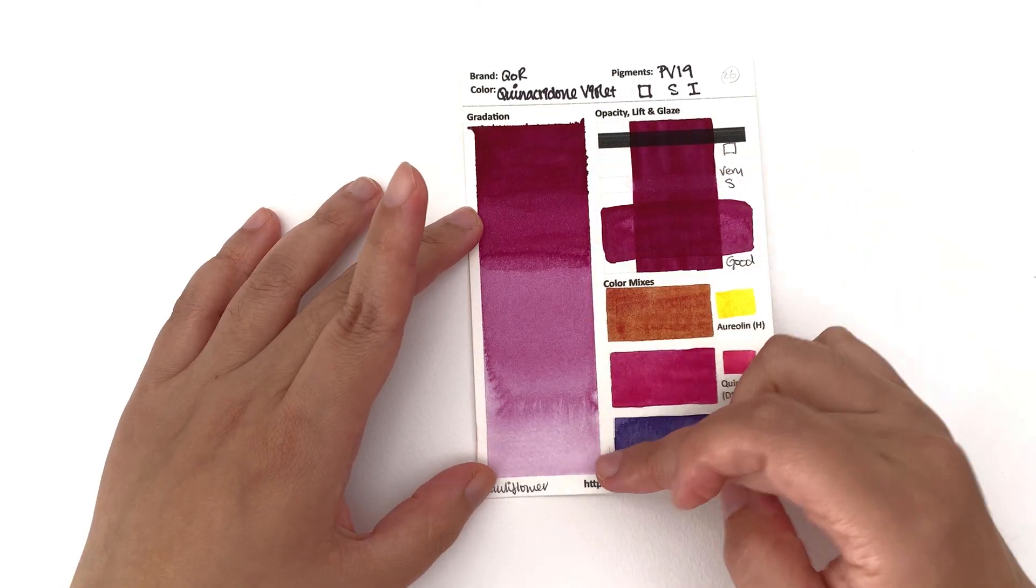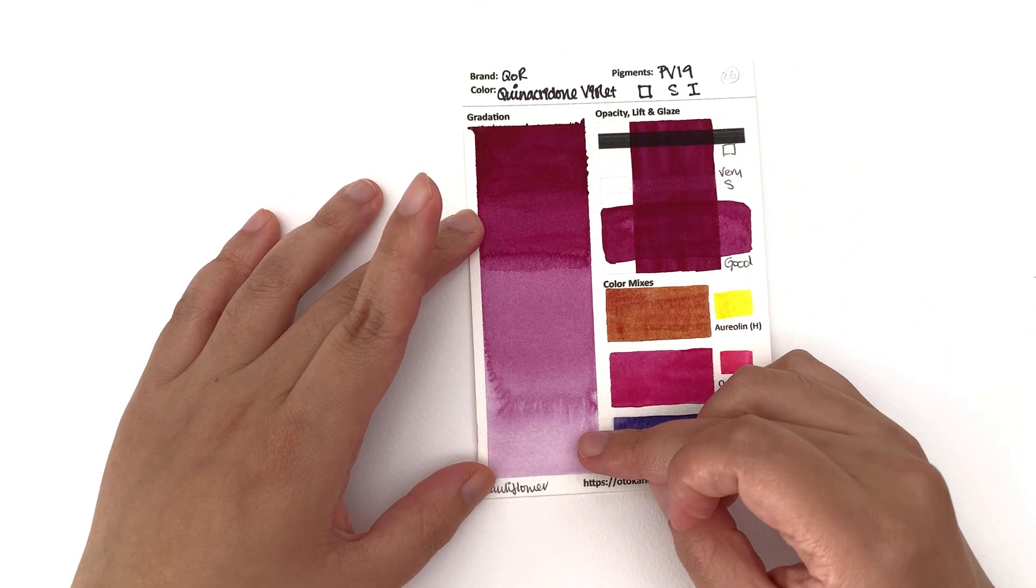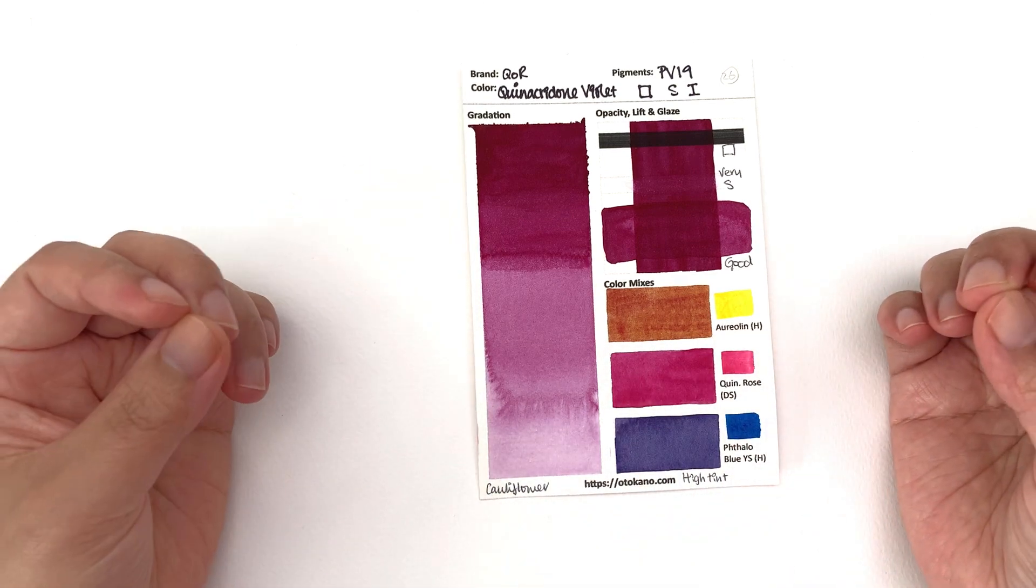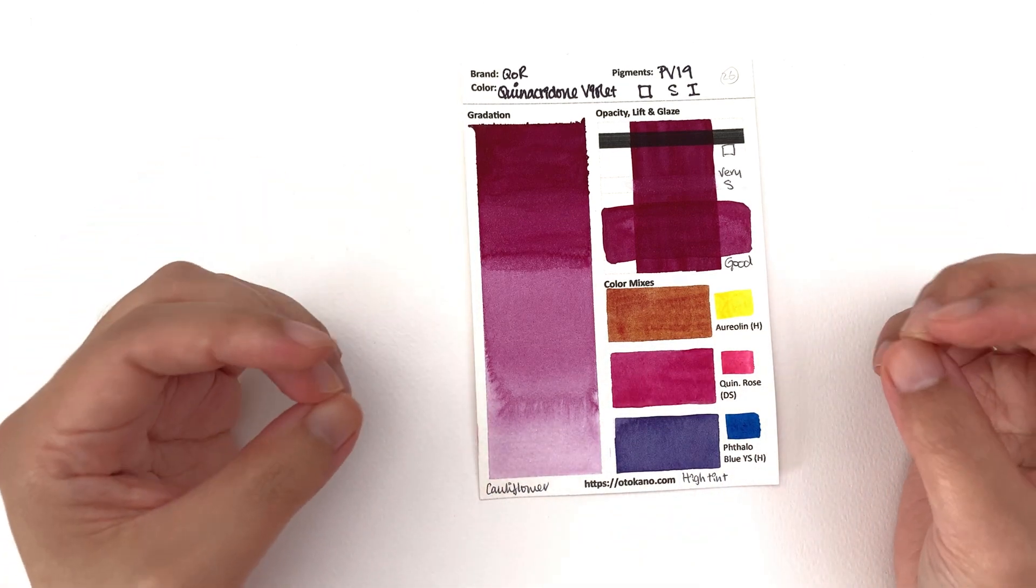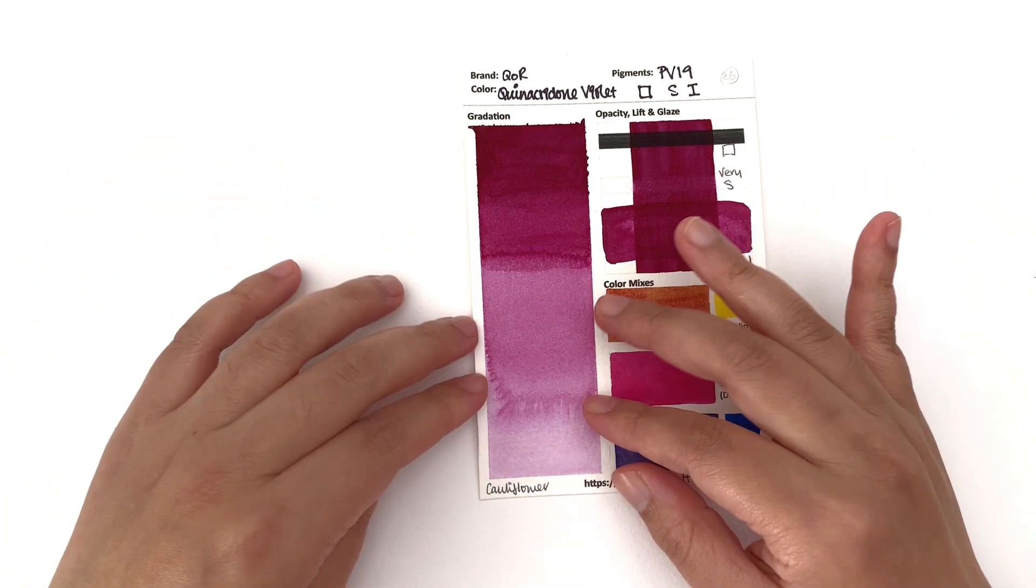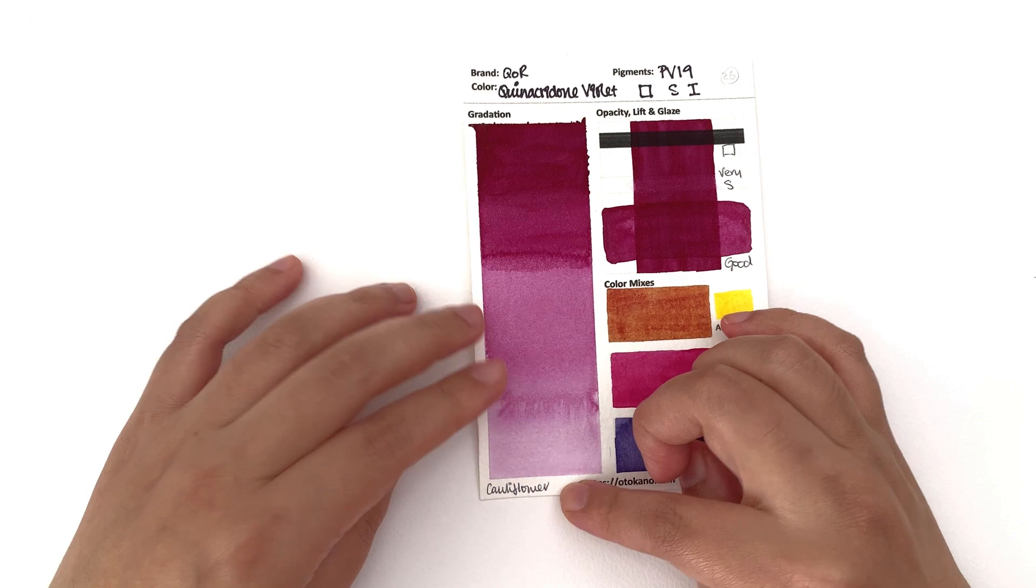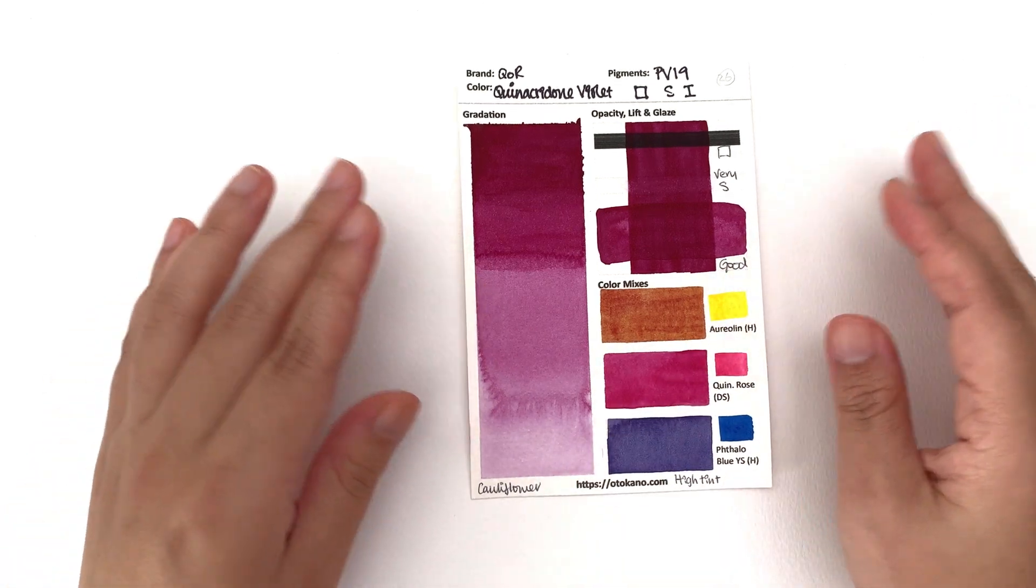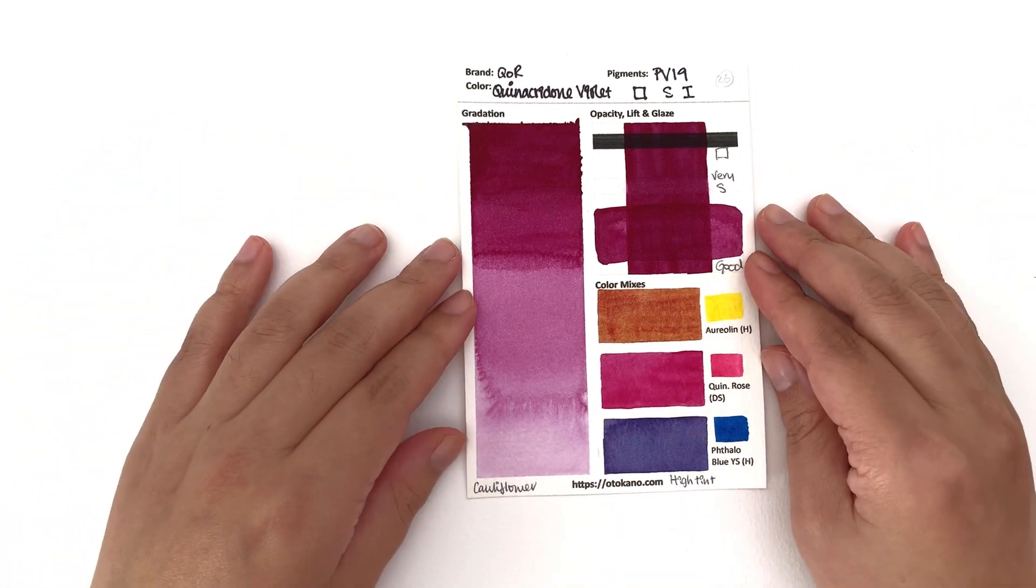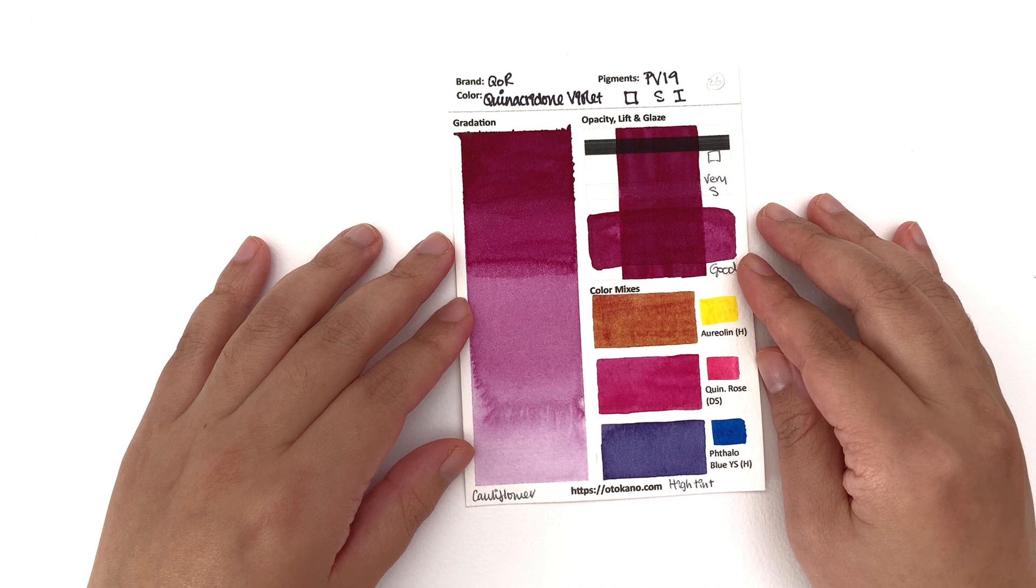You can get a good range in value but because it's a quinacridone, they are usually more finicky in terms of how much water you can use with them. If you're not careful you will get cauliflowering happening. So just watch out for how much water you have on your brush. Dab it on a tissue before you put it down on the paper.